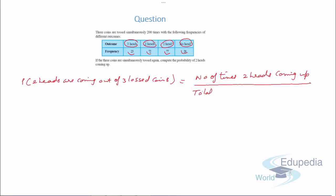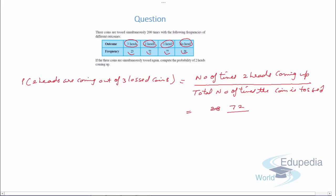In probability of statistics, we need to be very careful about what we are writing, because there has to be an exact match between what we want to express and what we are finding. The probability of two heads equals number of times two heads came up upon total number of times the coins were tossed, which is 72 upon 200. Simplifying, this comes out to be 9 by 25.